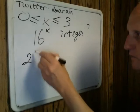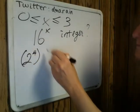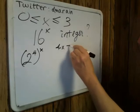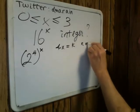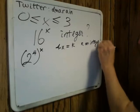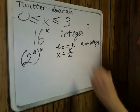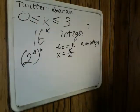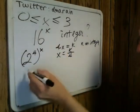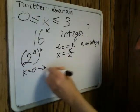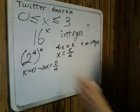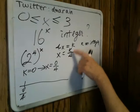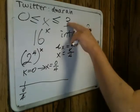Well, 16 is 2 to the fourth. So 16^x equals 2^(4x), and we want 4 times x to equal k, where k is an integer. In other words, x equals k over 4. Our solutions will come from all rational numbers of the form k/4, where k is an integer, bounded by our restrictions.